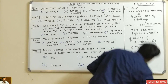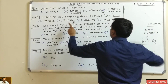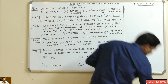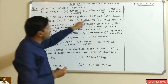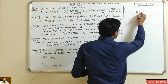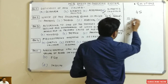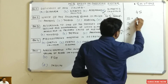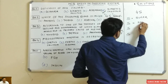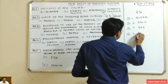So altogether, deficiency of ADH causes diabetes insipidus. Now coming to the second question: which of the following glands is called the 4S gland? The 4S means sugar, salt, sex, and stress.